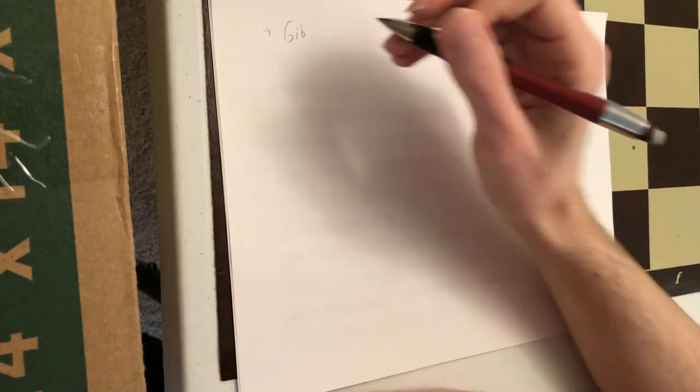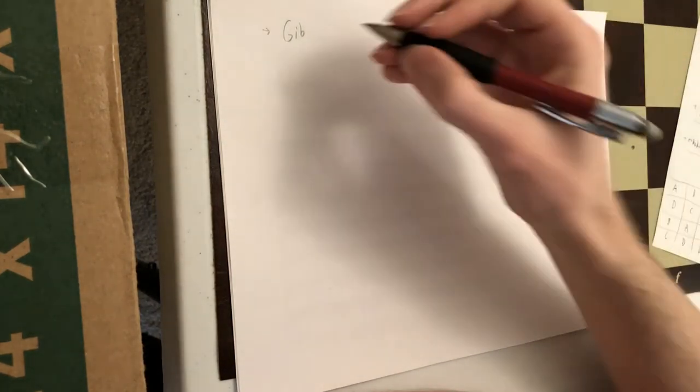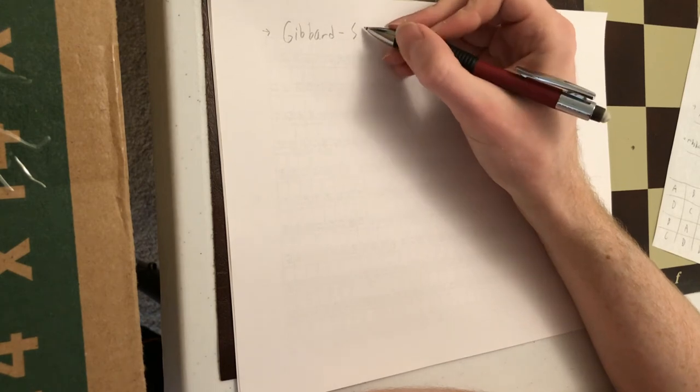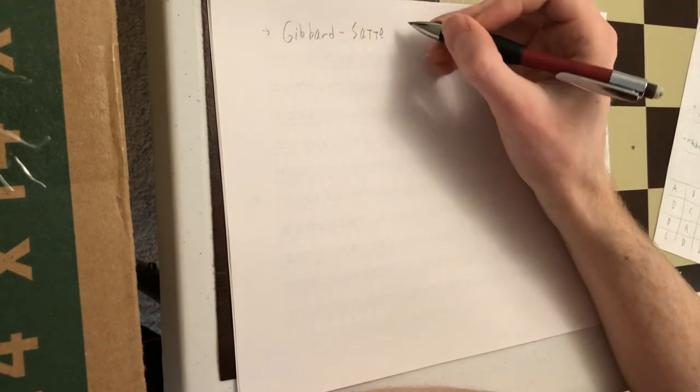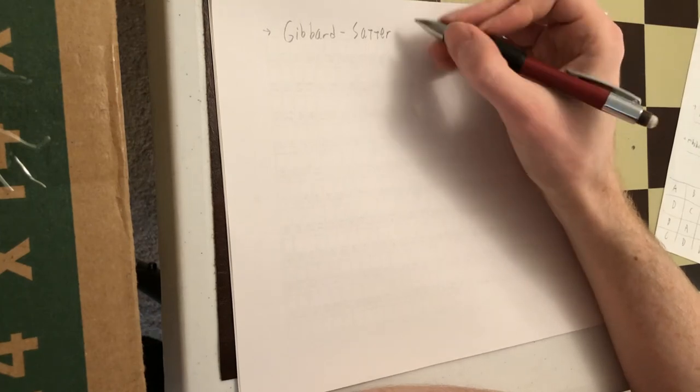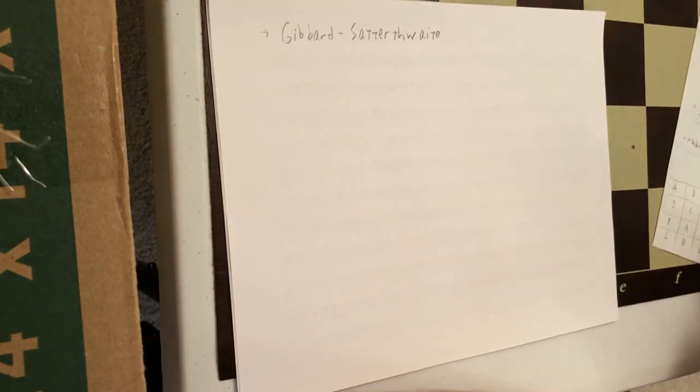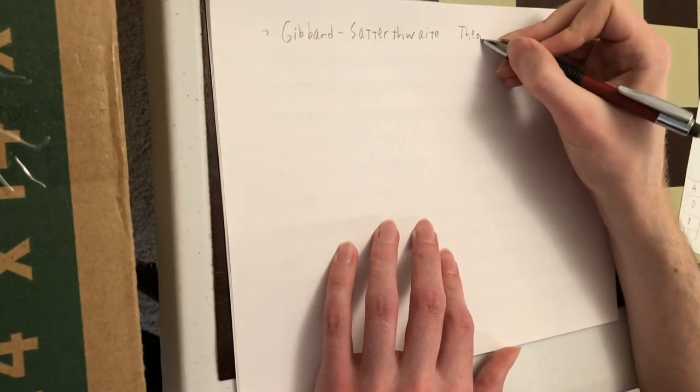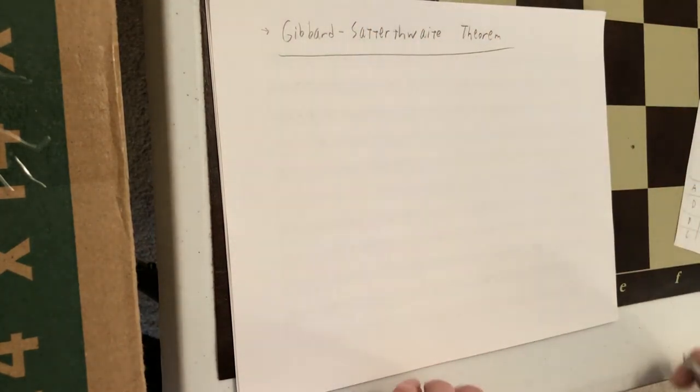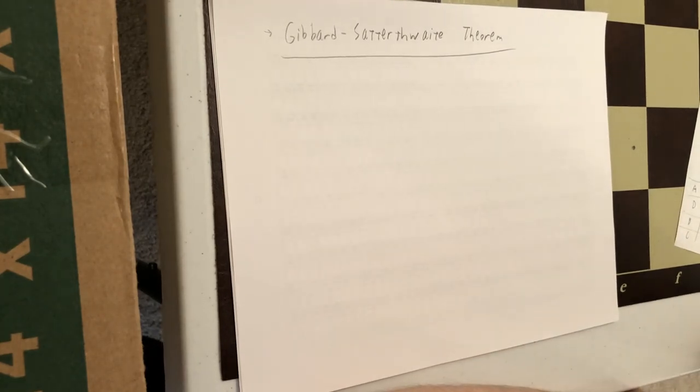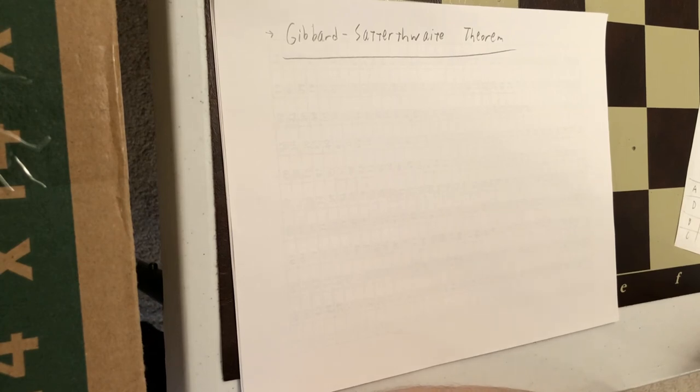So this is the Gibbard and somebody else theorem shows that if you have three or more candidates, then you're going to have strategic voting unless you have a dictator agent.